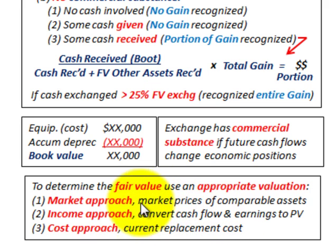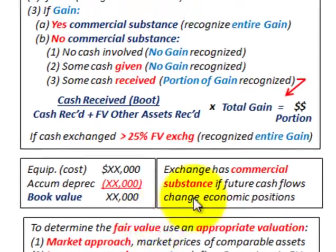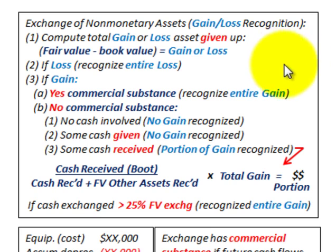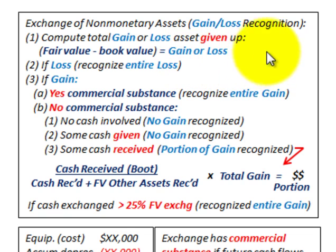Usually when you determine fair value, that's the exchange price agreed between the two parties. When working through these problems, have this decision table alongside your problem and make your decisions from there. Remember, you must correctly determine your fair value and your book value — if those values aren't right, you're going to end up with the wrong solution.